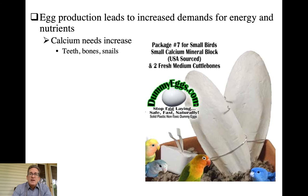We've already talked about the energetic expenditures associated with the three main events in the annual cycle of a bird: molt, migration, and reproduction. Reproduction takes energy demands for sure, but also requires a good degree of extra nutrients and minerals. In the case of females, they have to get a lot more calcium in their diet — beyond what they need for basic maintenance — to produce those eggshells.